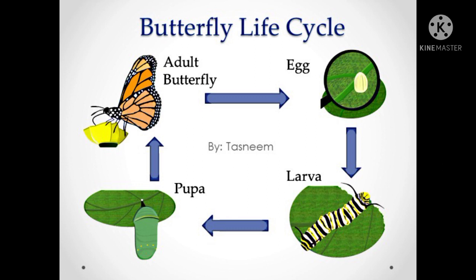It goes to the adult butterfly. In the life cycle of the butterfly there are four stages: the adult butterfly lays eggs; as the eggs hatch, a worm-like structure comes out in the larva stage, known as the caterpillar. This caterpillar covers itself in a cocoon, and after some time, the young butterfly comes out from the cocoon as the adult butterfly.